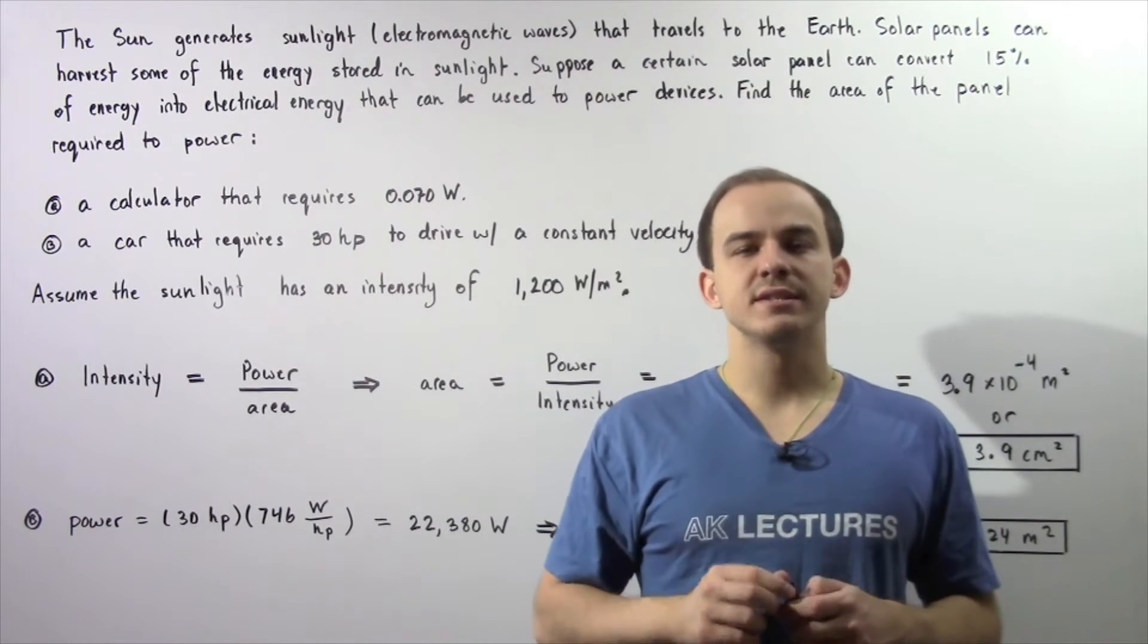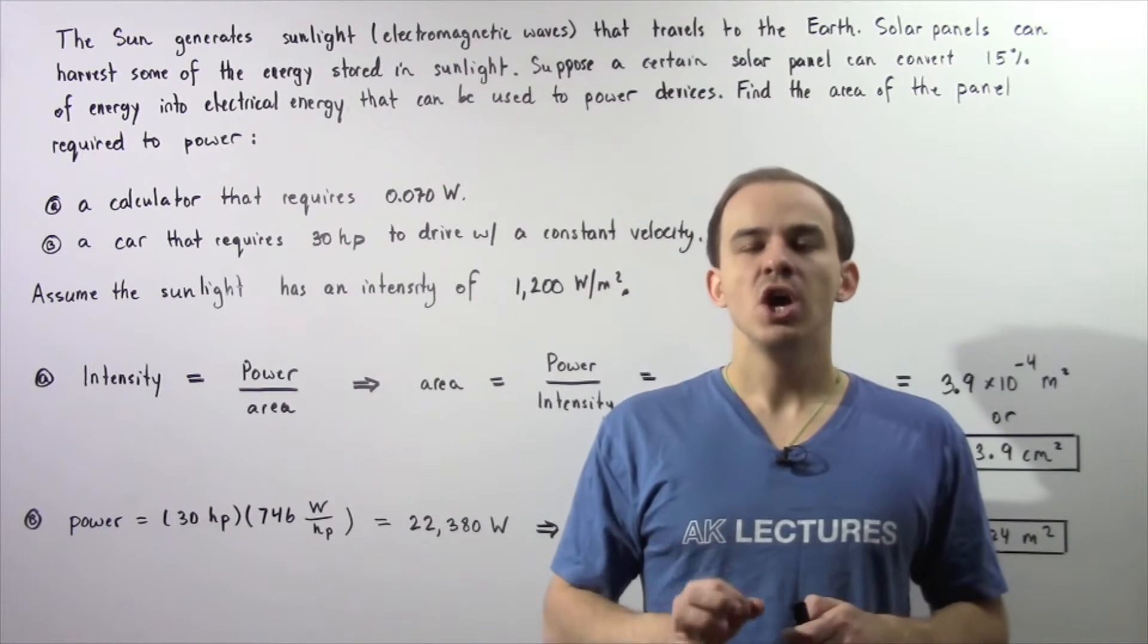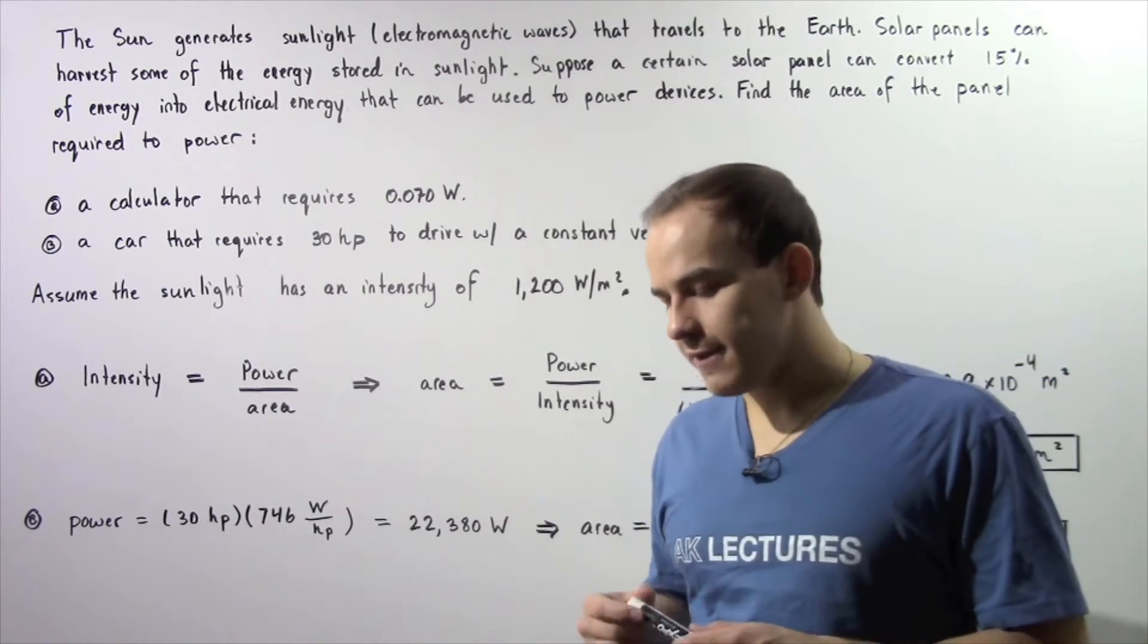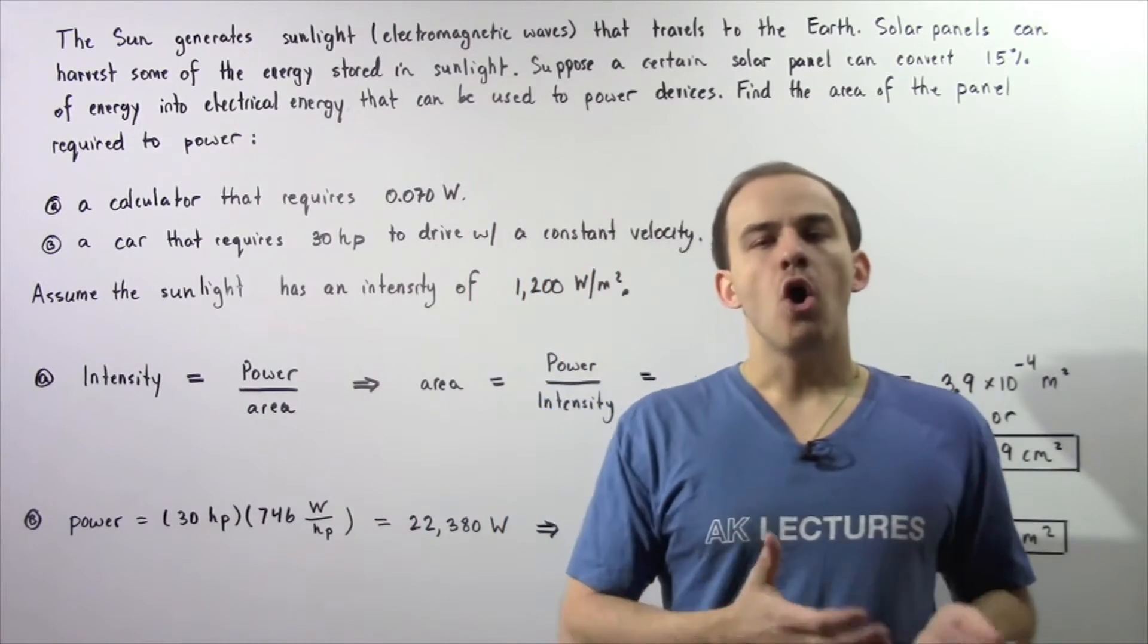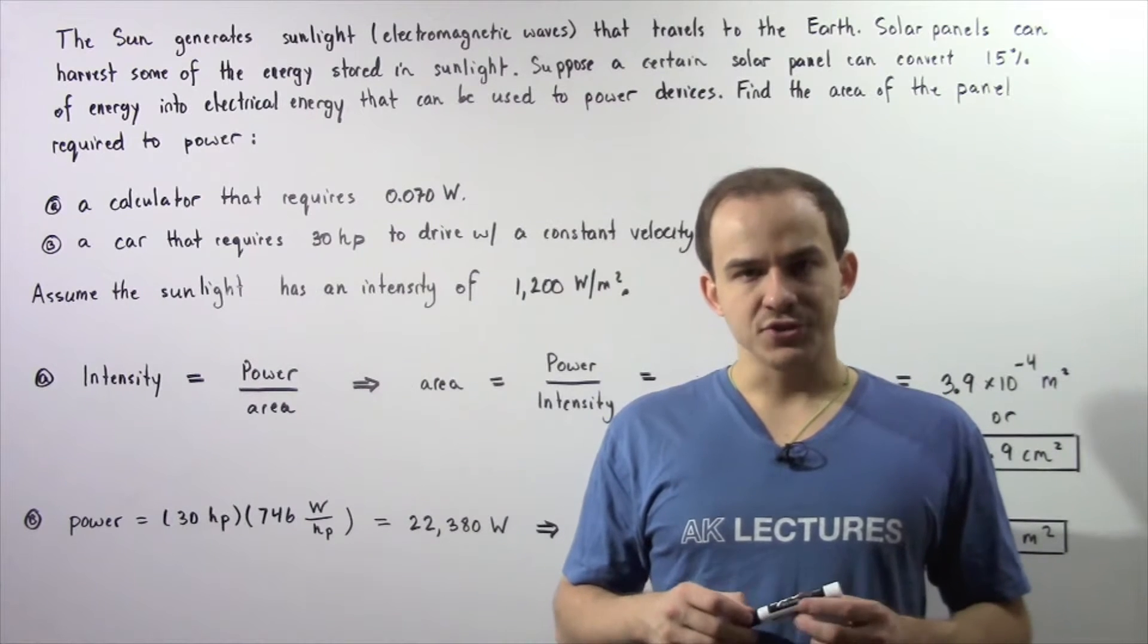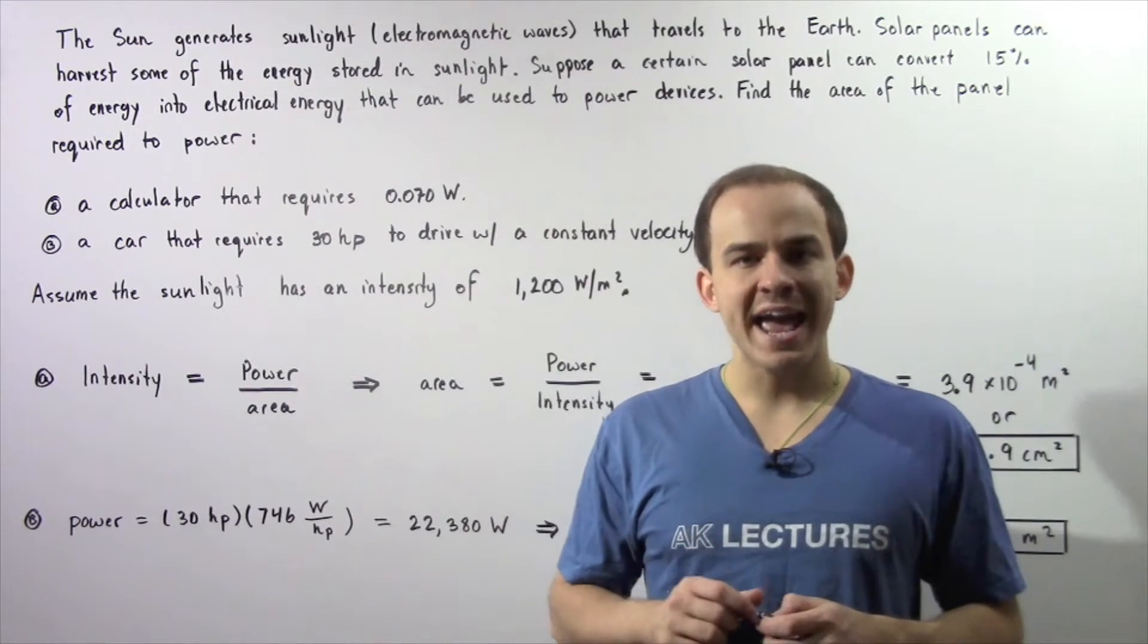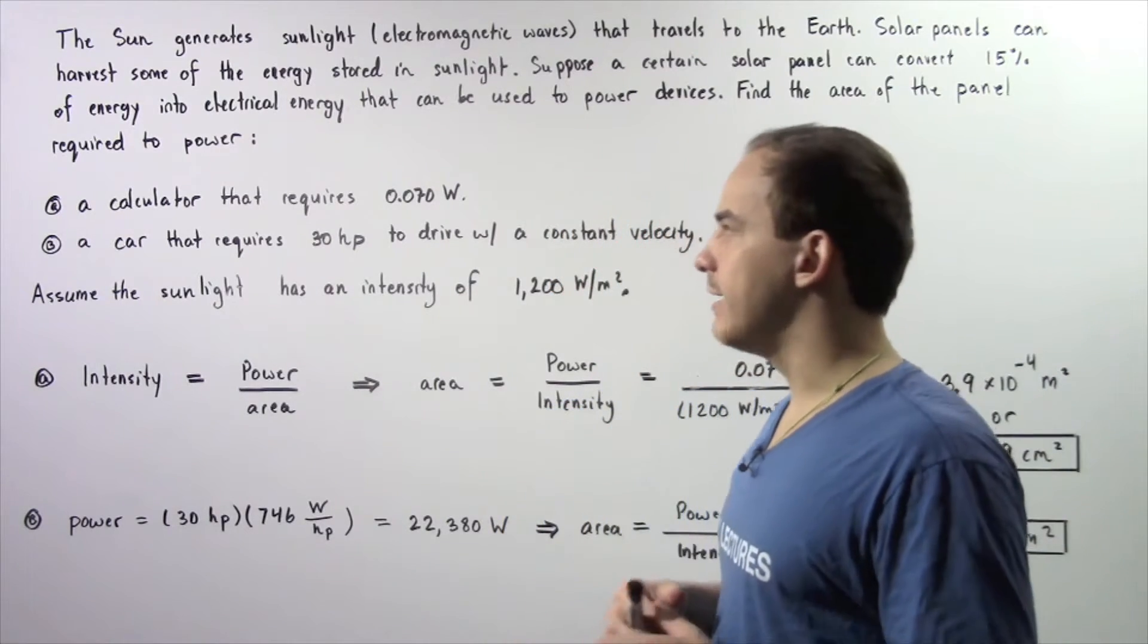In the previous lecture, we discussed a concept known as intensity. We defined what the intensity of an electromagnetic wave is. Remember, just like any other wave, electromagnetic waves are capable of carrying energy over great distances when they propagate through space. We define the intensity of an electromagnetic wave as the average power per area that is transported by an electromagnetic wave.